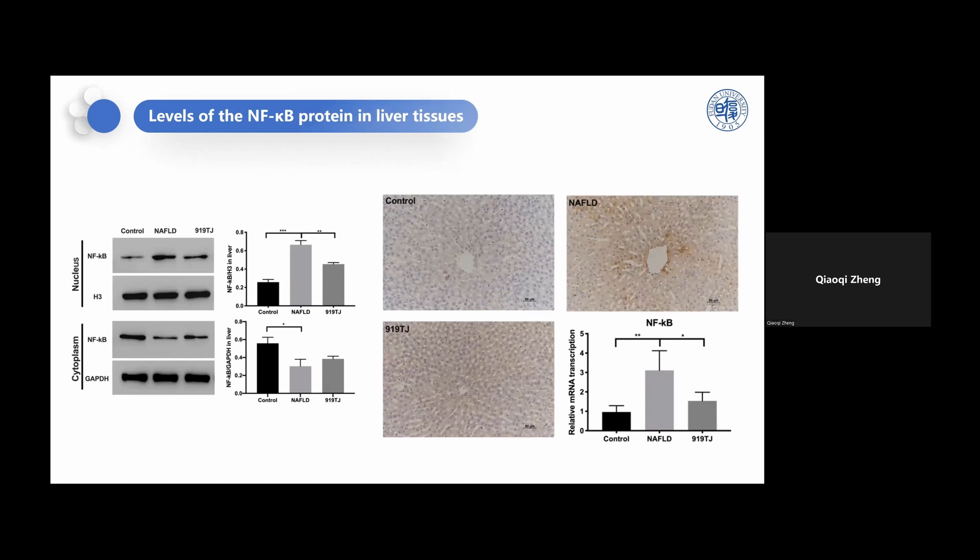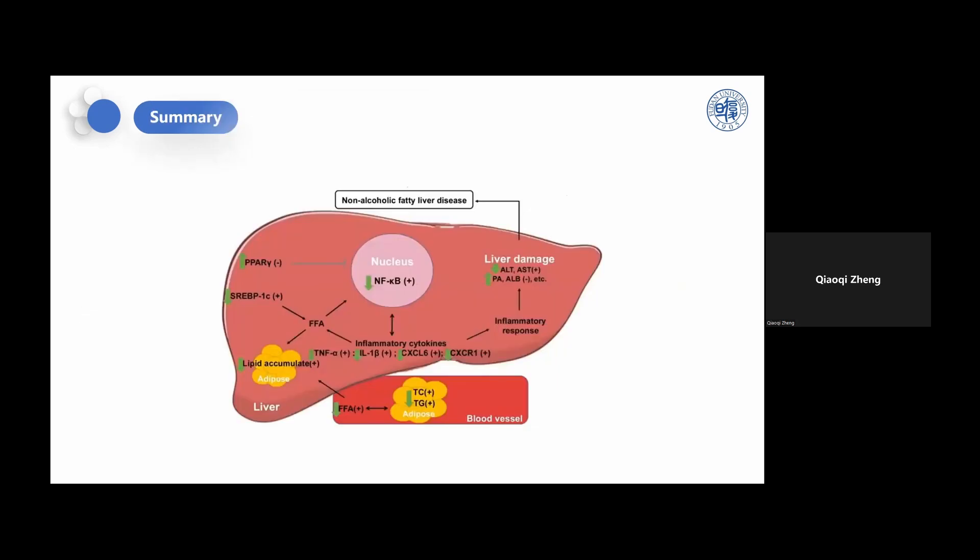In summary, 919 syrup was found to reduce weight and food intake in NAFLD rats, ameliorate the pathological changes in liver tissues, normalize lipid-related and liver function indicators, regulate lipid metabolism in the liver, reduce lipid accumulation, and ameliorate the inflammatory state. Inflammation plays a key role in the development of NAFLD, and abnormalities in the NF-κB signaling pathway can cause chronic hepatitis. Activation of NF-κB can aggravate oxidative stress and inflammatory responses and dramatically accelerate the progression of NAFLD.